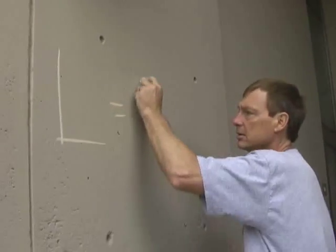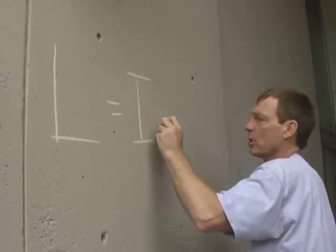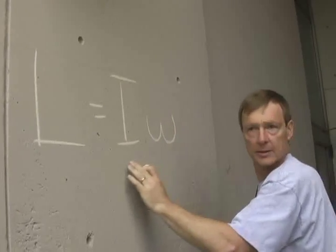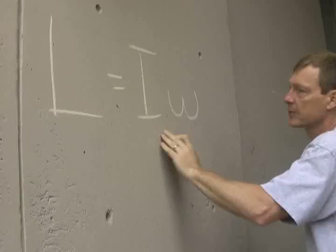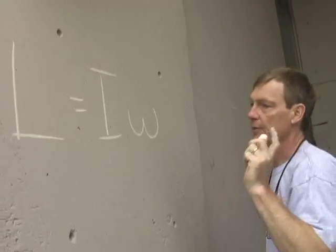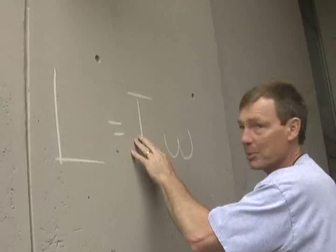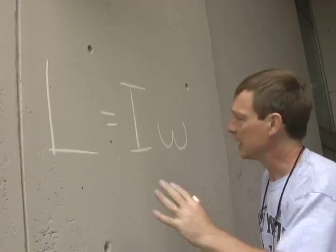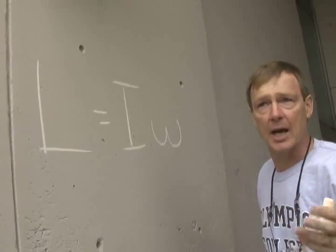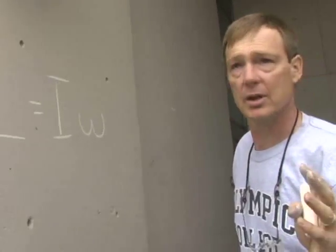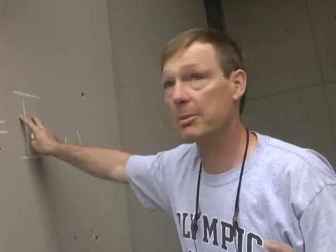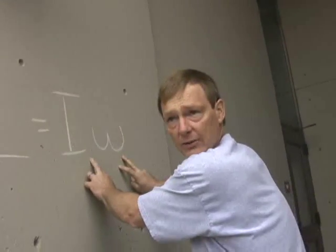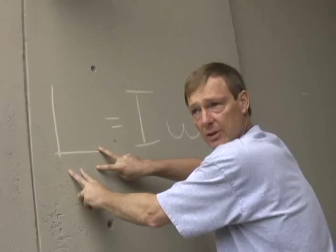Angular momentum is moment of inertia times angular velocity. So I've got moment of inertia times angular velocity equals angular momentum. Unless I apply a change in angular momentum, it's going to be constant. But while keeping it constant, I can adjust the components without changing the final value. If I double the moment of inertia, that would cut the angular velocity in half, and L — angular momentum — would still be the same.